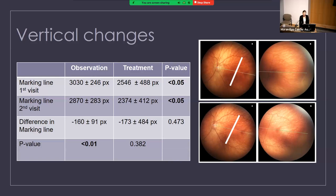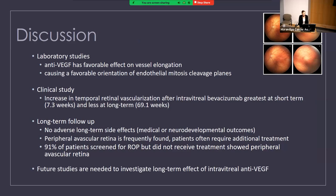In discussion: laboratory studies have shown that anti-VEGF has a favorable effect on vessel elongation in the retina, thought to be due to anti-VEGF causing a favorable orientation of endothelial mitosis cleavage planes responsible for vessel elongation. The only clinical study showing quantitative data found that in patients who received intravitreal bevacizumab, the increase in temporal retina vascularization was greatest at the short-term visit at 7.3 weeks and less at the long-term visit — but those patients were not compared to control groups. In terms of long-term follow-up, no adverse medical or neurodevelopmental side effects were found in the BEAT-ROP study or other long-term studies.